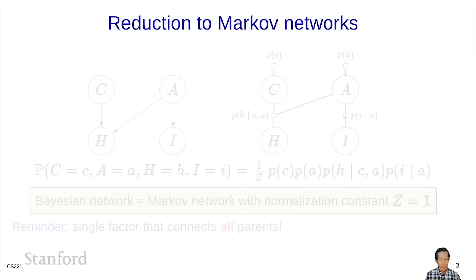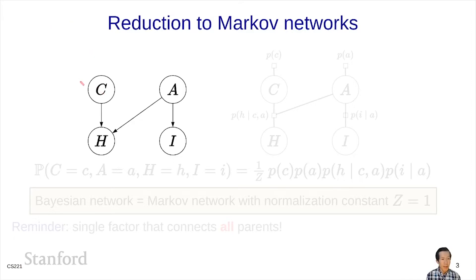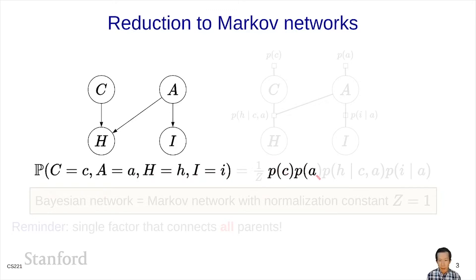The overarching strategy we're going to take for performing inference in Bayesian networks is to convert them into Markov networks, which we've already discussed inference for. Recall that the joint distribution over the variables is equal to simply the product of the local conditional distributions, by definition of the Bayesian network.